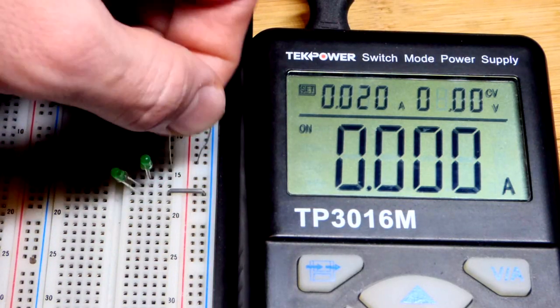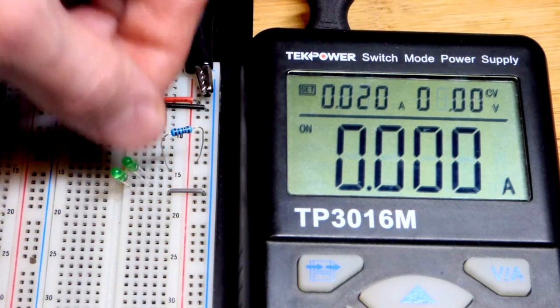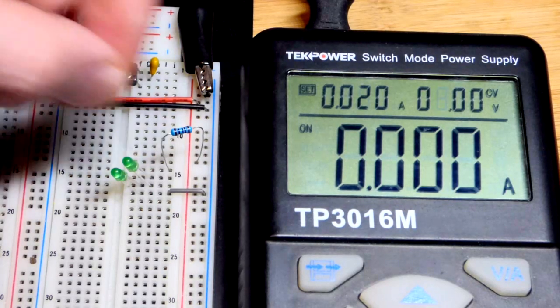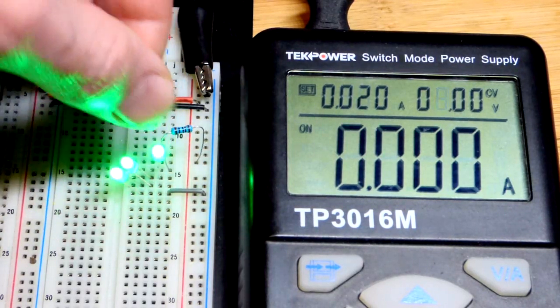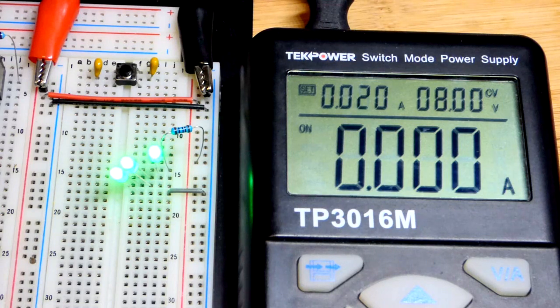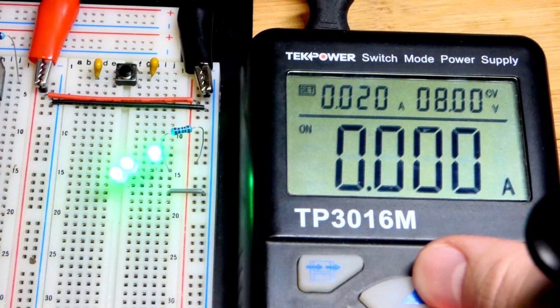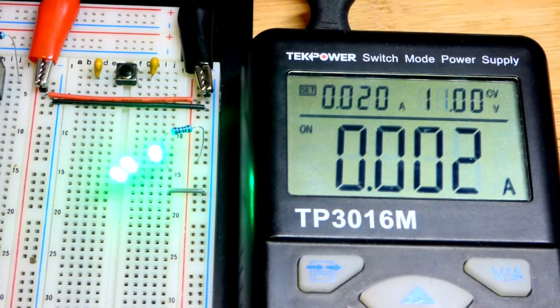Move the resistor up one row, and then throw in another green LED right there. And there you can see the current, again, drop to nothing until we go up about 3 volts.